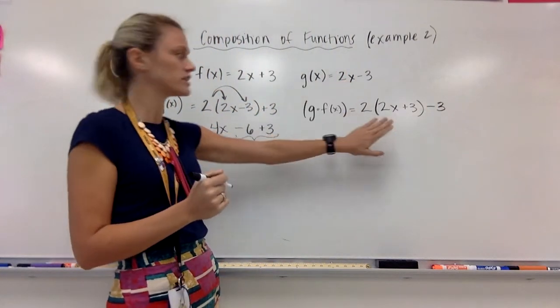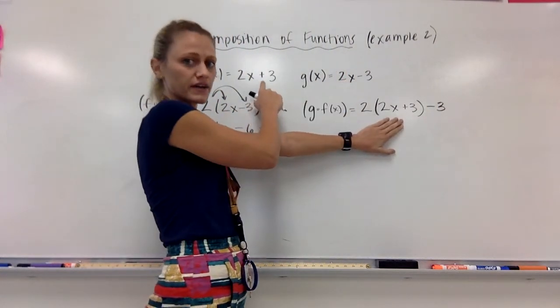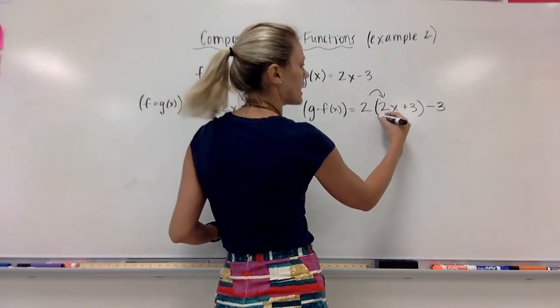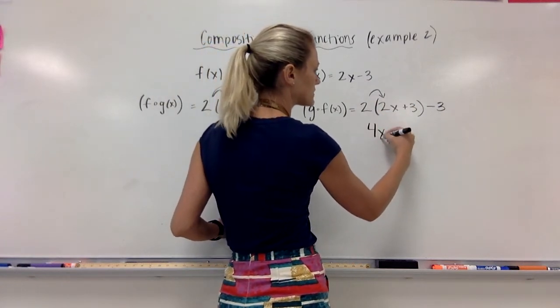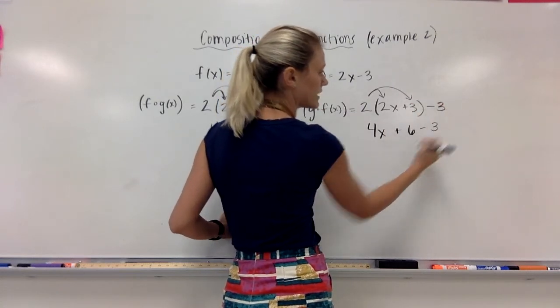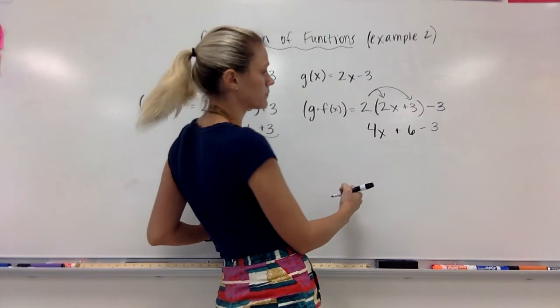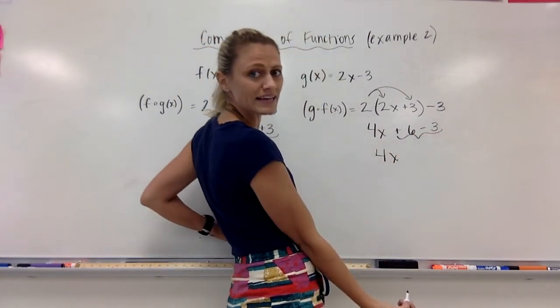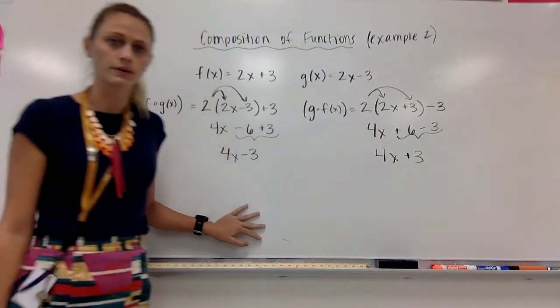I've got my g of x function, but instead of x I've put my f of x function. I'll distribute: 2 times 2x is 4x, 2 times 3 is 6, and I'll bring down my minus 3. 4x, positive 6 minus 3 is plus 3.